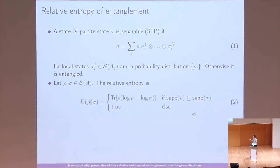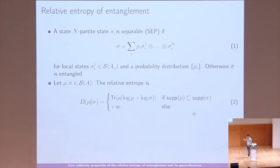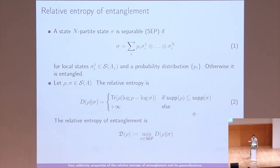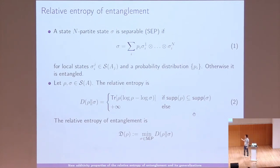The relative entropy, also called the Umegaki relative entropy, has the form trace(ρ log ρ − log σ), subject to the support condition that the support of ρ is included in the support of σ; otherwise it is infinite. Once we define the relative entropy, we can build an entanglement measure out of it.